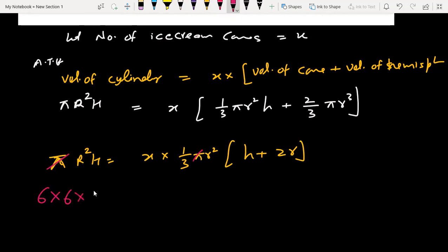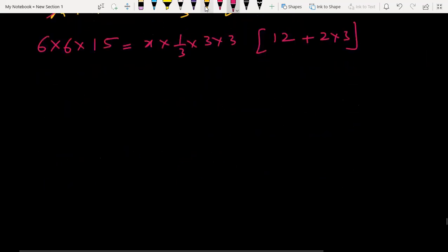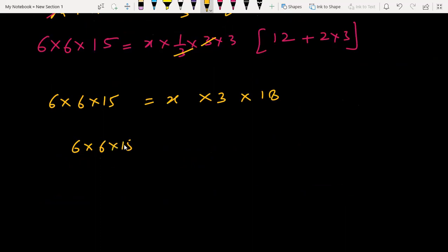The cylinder has r² = 6 × 6 and height 15. The cone has r = 3, h = 12, and 2 × 3 = 6. So 6 × 6 × 15 = x × 3 × 18. Calculating: x = 6 × 6 × 15 / (3 × 18).